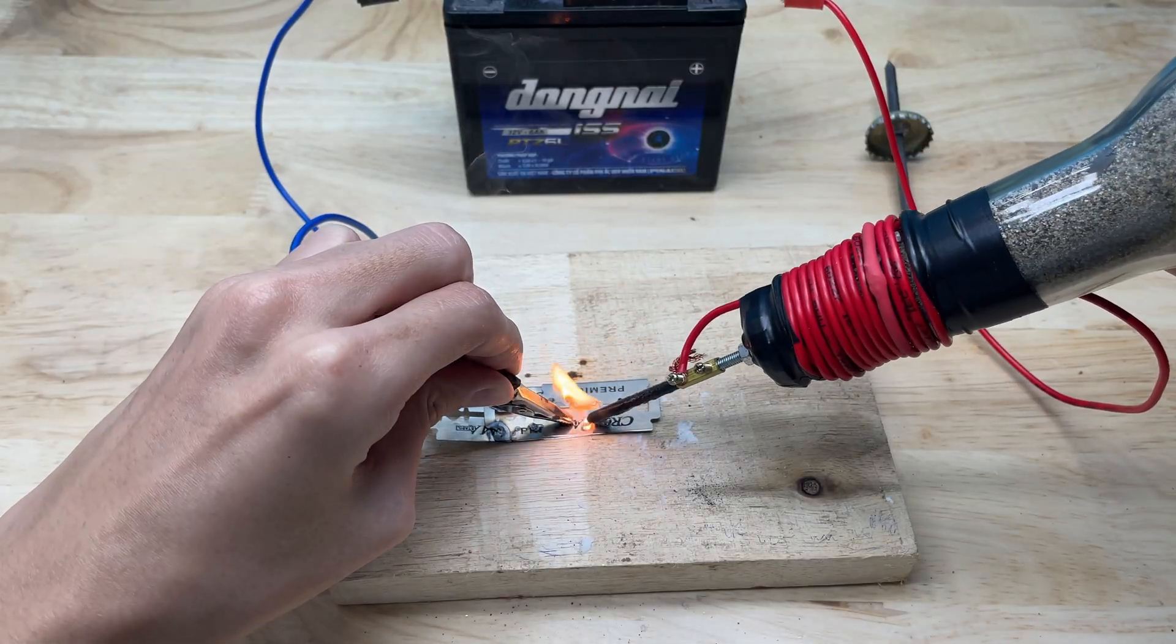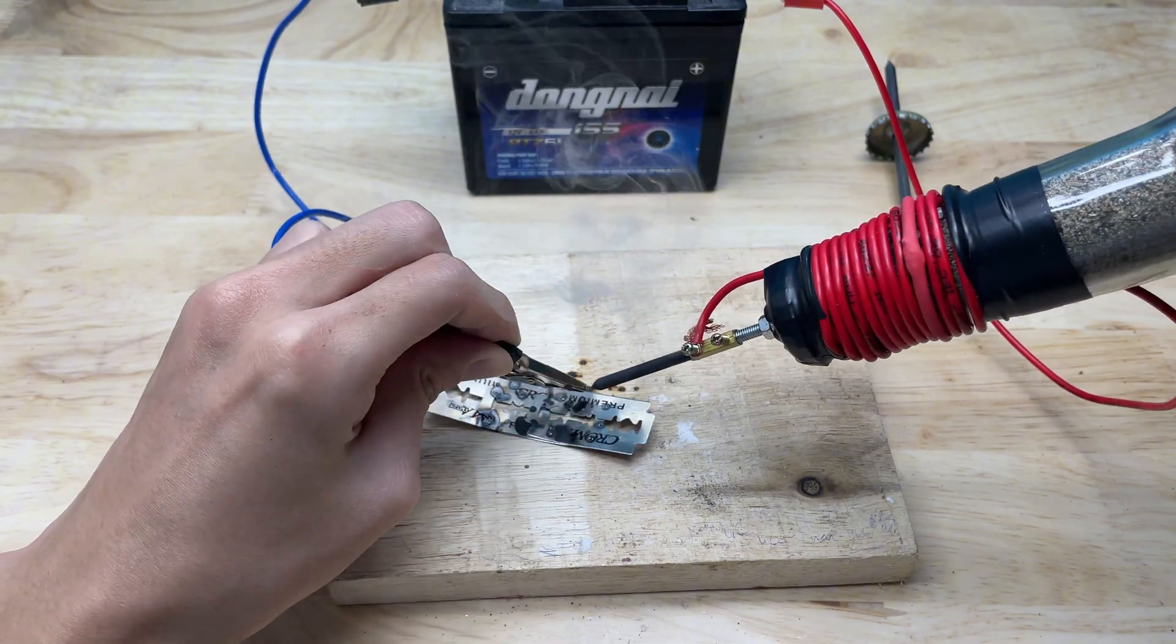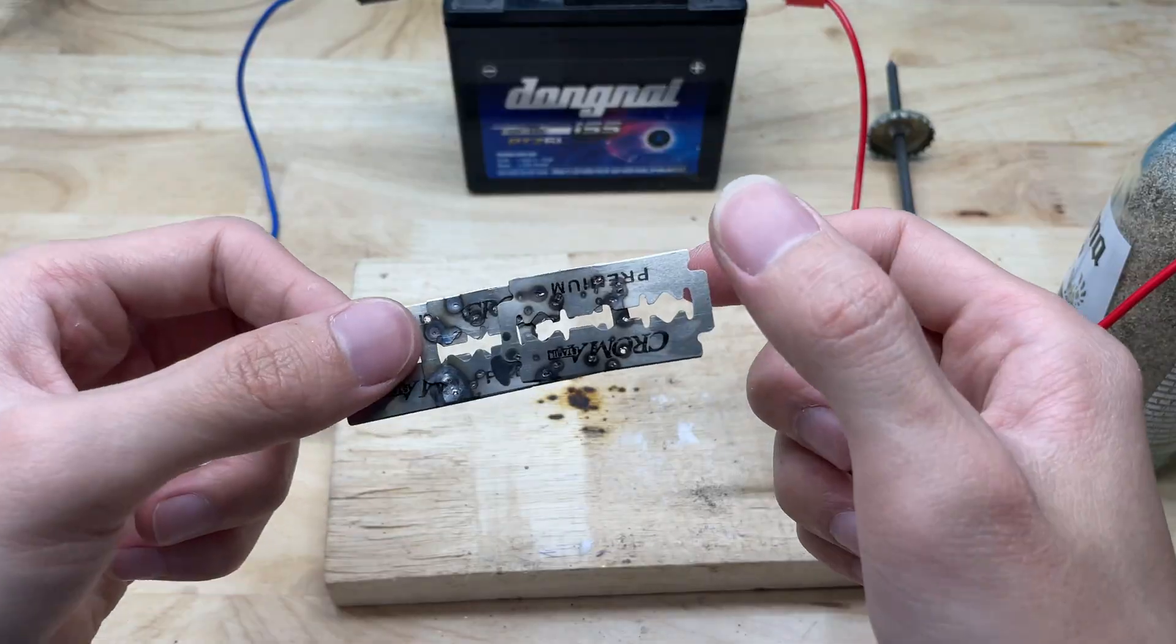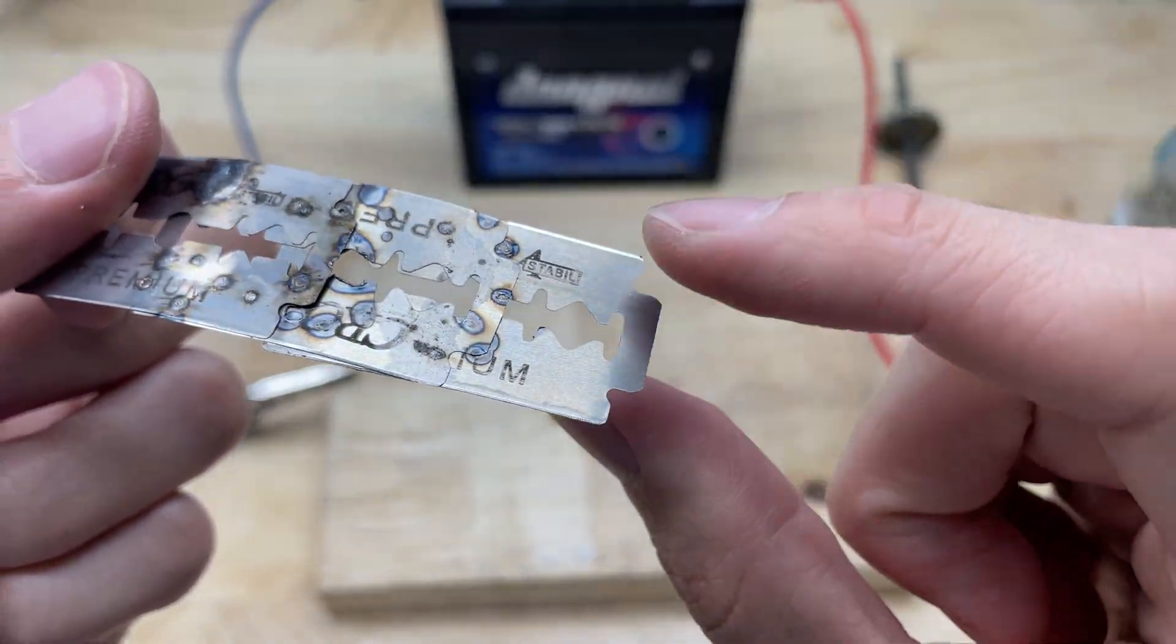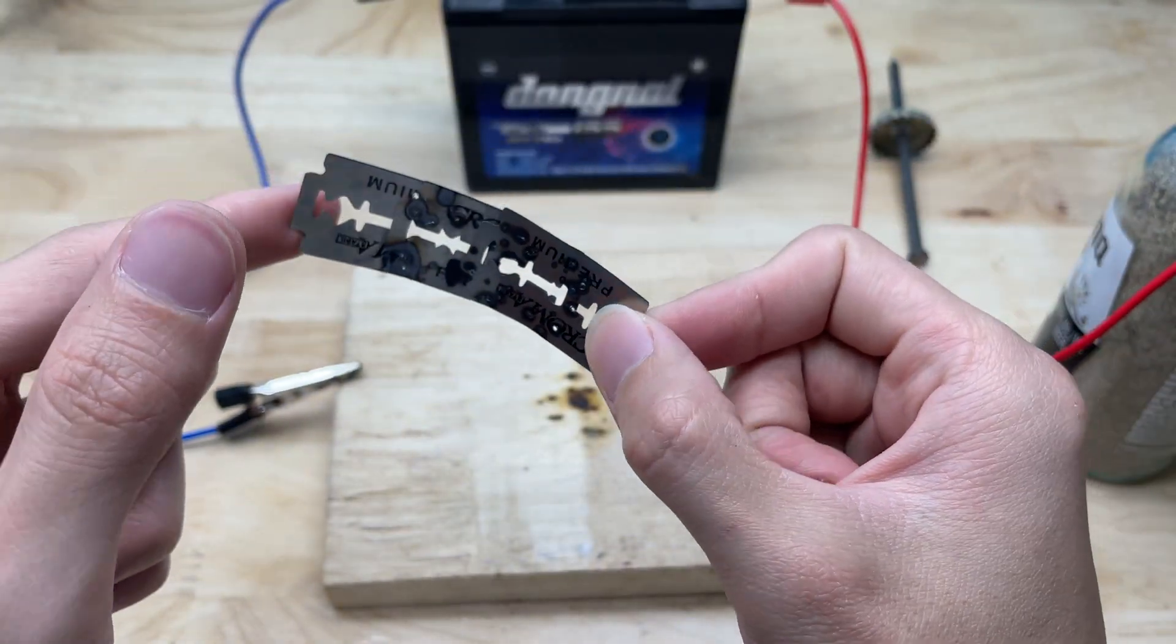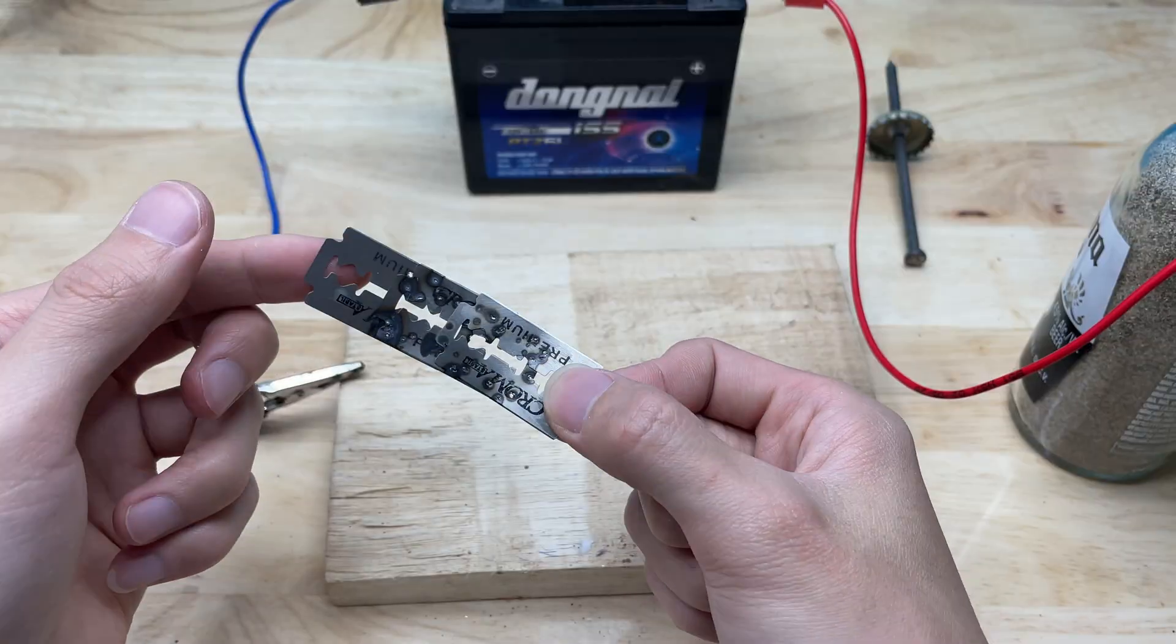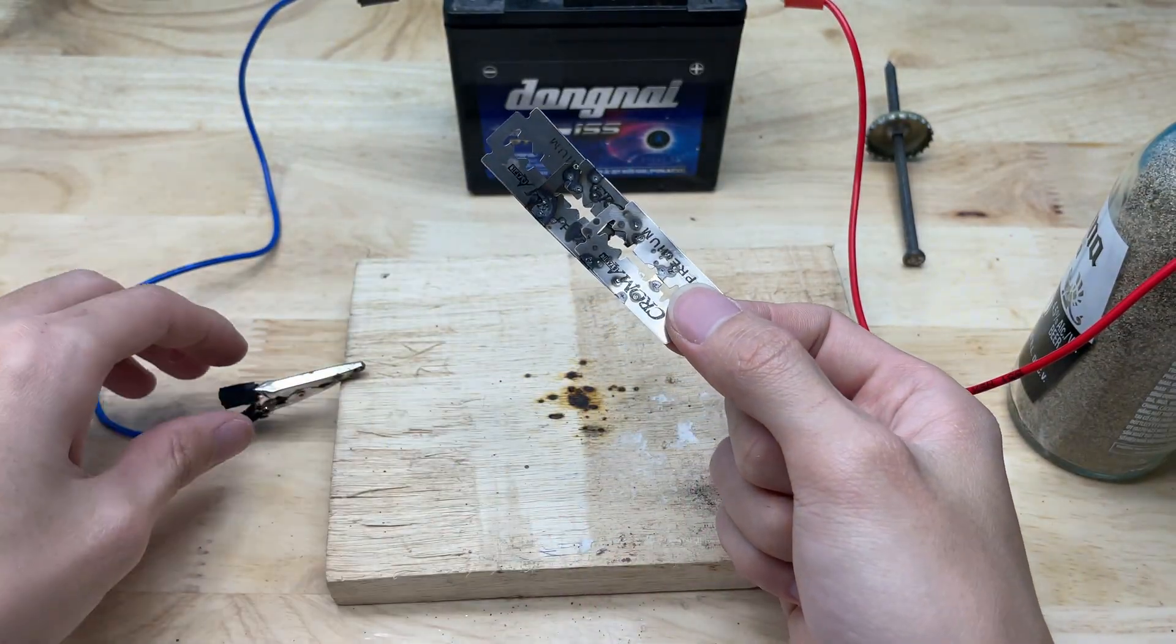When using the welding tip made from the battery core, the welding experience feels noticeably different compared to the nail tip. The battery core has a larger cross section, so it retains heat better with a more even and stable temperature during operation. When applied to the point being worked on, the weld appears smoother and more consistent, making it especially suitable for components that require longer heating times.